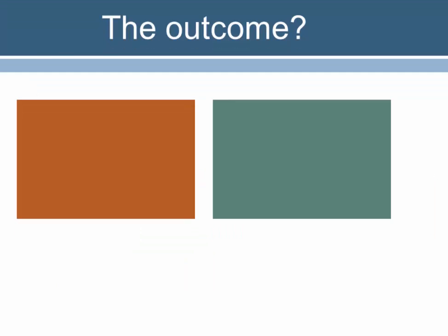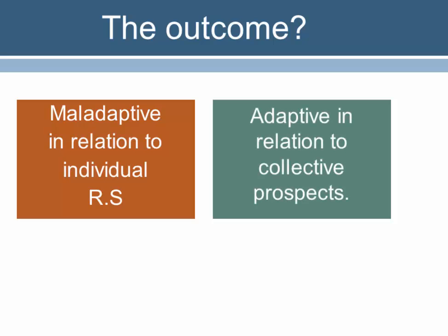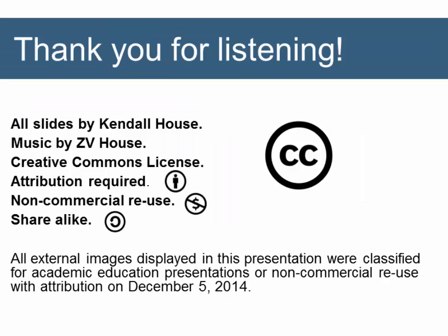The outcome of this process appears paradoxically beneficial, at least in some ways. This may be maladaptive in relation to individual reproductive success, but may be adaptive in relation to the collective prospects of humanity — if it slows and stops population growth. The possible downside is that the material acquisitiveness of people from small families and high incomes might defeat the decrease in their numbers in terms of their ecological impact.